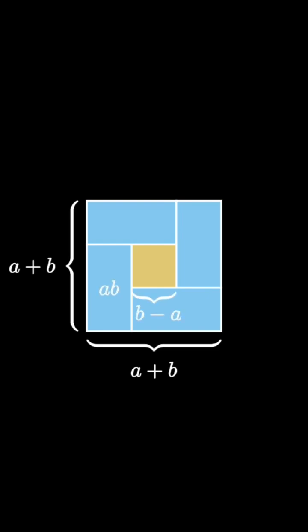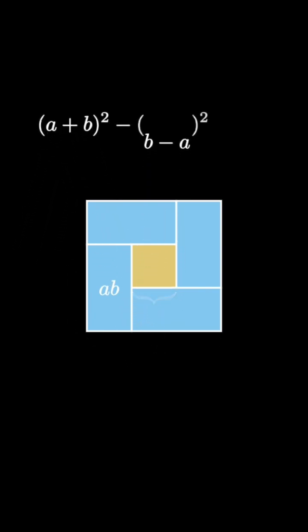From this diagram we see that the quantity a plus b squared minus the quantity b minus a squared must be equal to the quantity 4 times a times b.